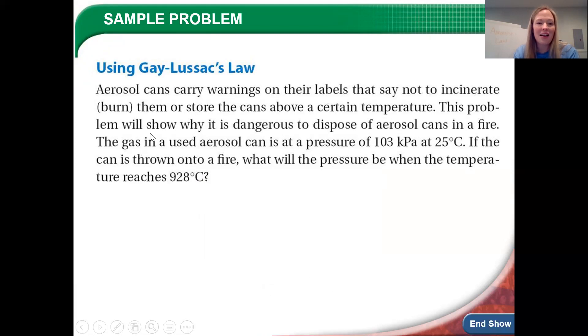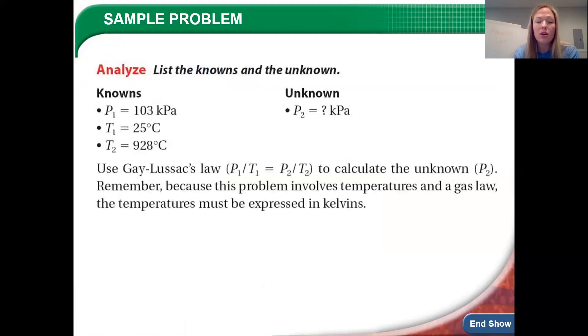The gas in a used aerosol can is at a pressure of 103 kPa at 25 degrees Celsius. If the can is thrown into a fire, what will the pressure be when the temperature reaches 928 degrees Celsius? So the very first thing you need to do with all gas law problems is identify your variables, right? So your initial pressure, 103 kPa, which is just a teensy bit over atmospheric pressure. You know, atmospheric or standard pressure is 101.3. Temperature one is 25 degrees Celsius. Temperature two is 928 degrees Celsius. And they want to know what your final pressure is.